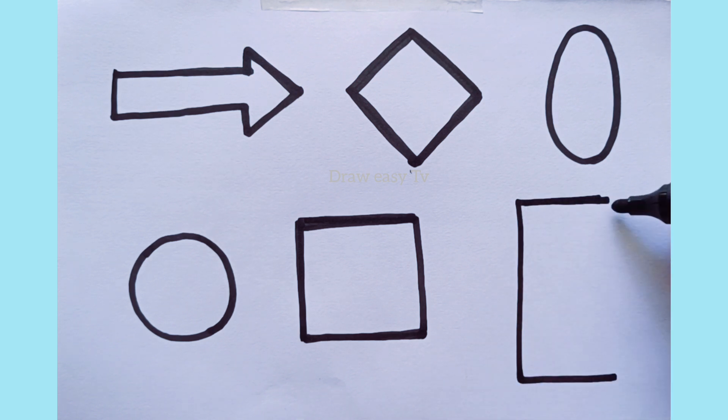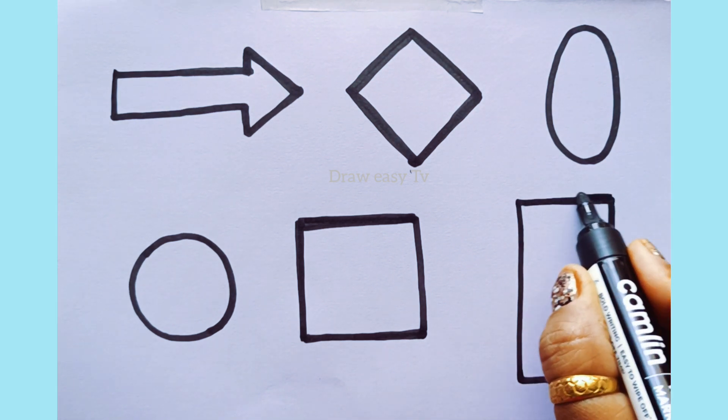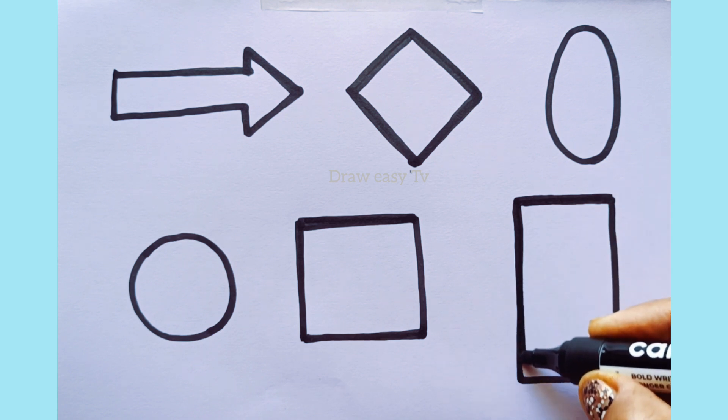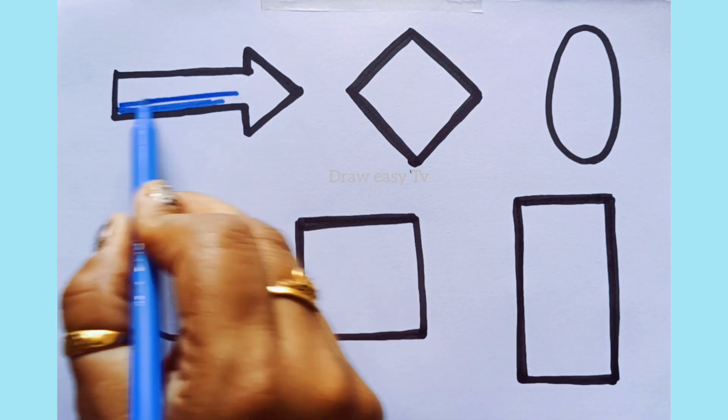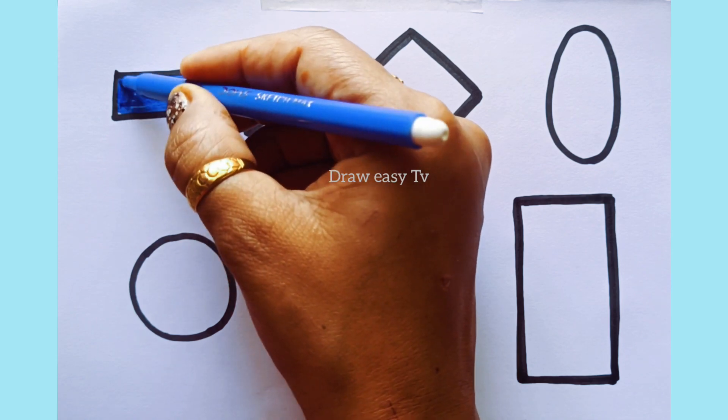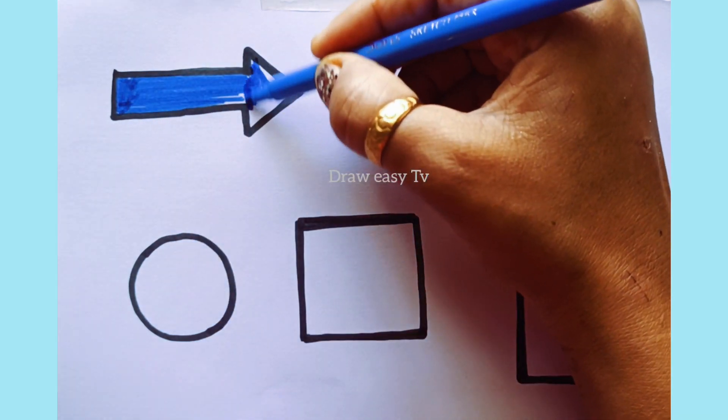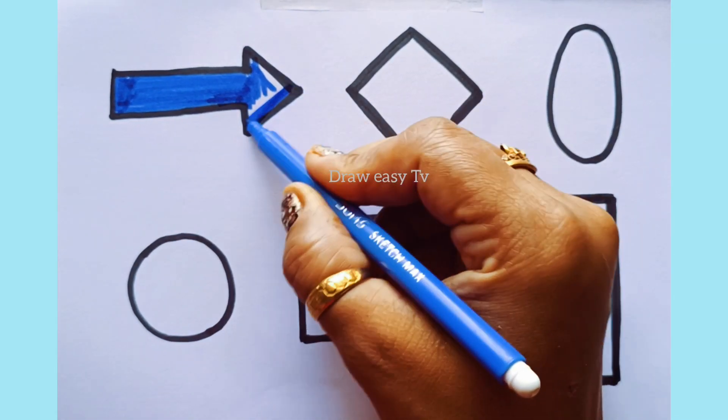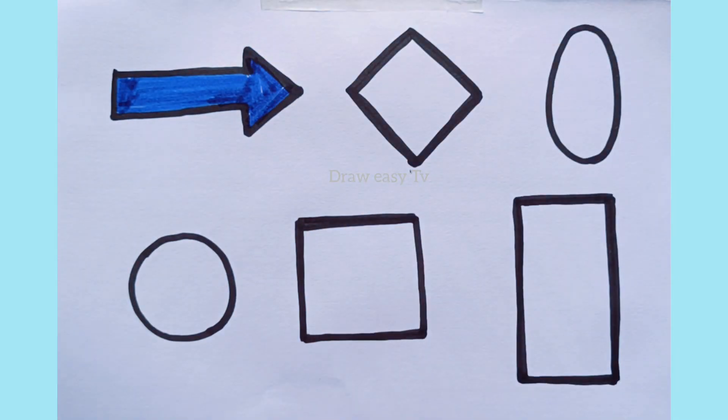Rectangle. A B C D E F G H I J K L M N O P Q R S T U V. Now, do color. It's dark blue color. Color the arrow with dark blue color.